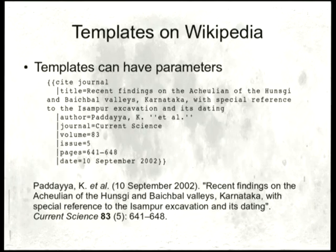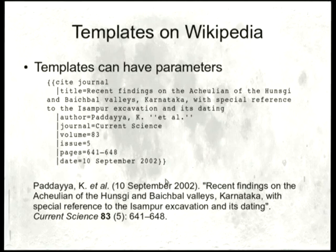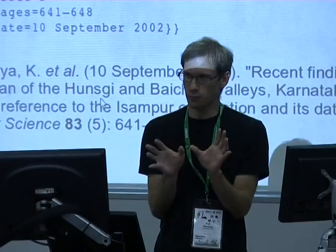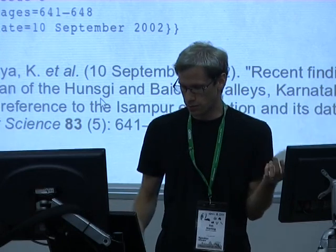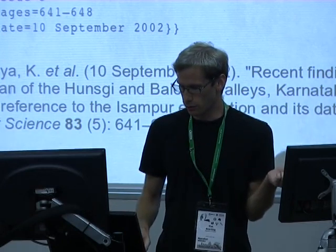Templates can have parameters. Here's an example of a template which is doing a journal citation — you can see it's got all of the relevant metadata for citing a journal. When you type this text into the edit box, you get what's shown down here. The template is responsible for taking all of those different parameters and formatting it into a standard, understandable way with italics and bold.